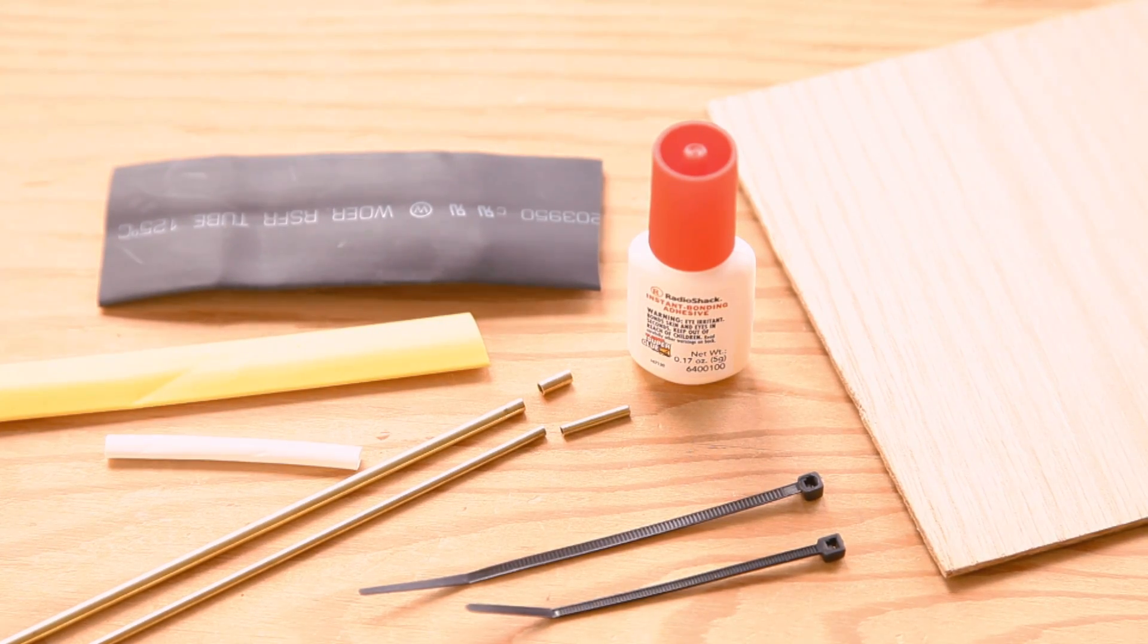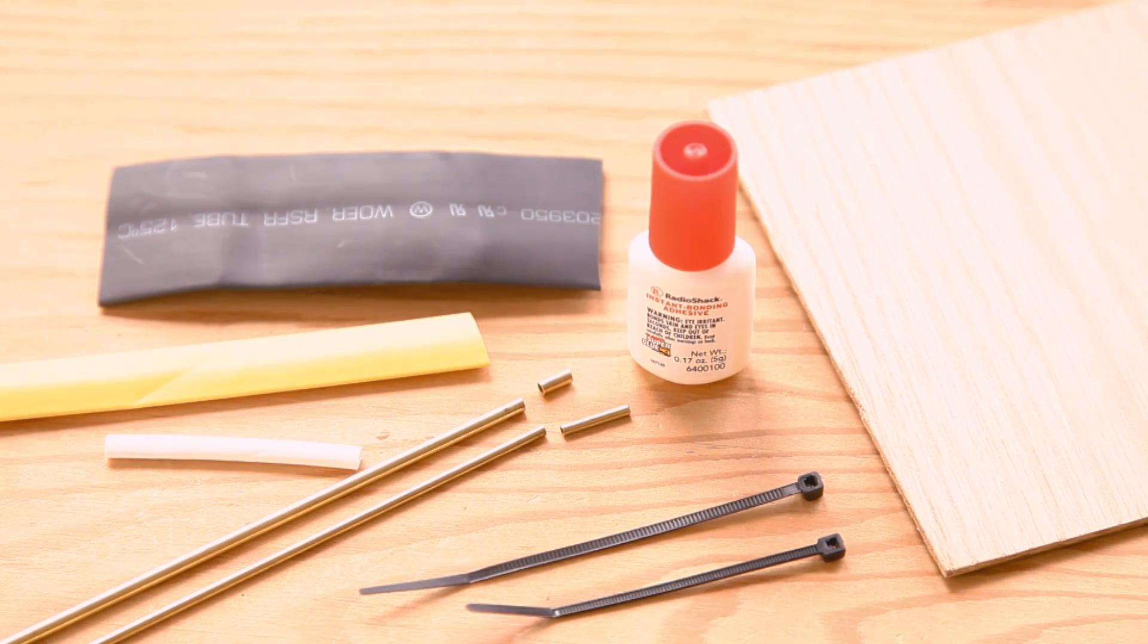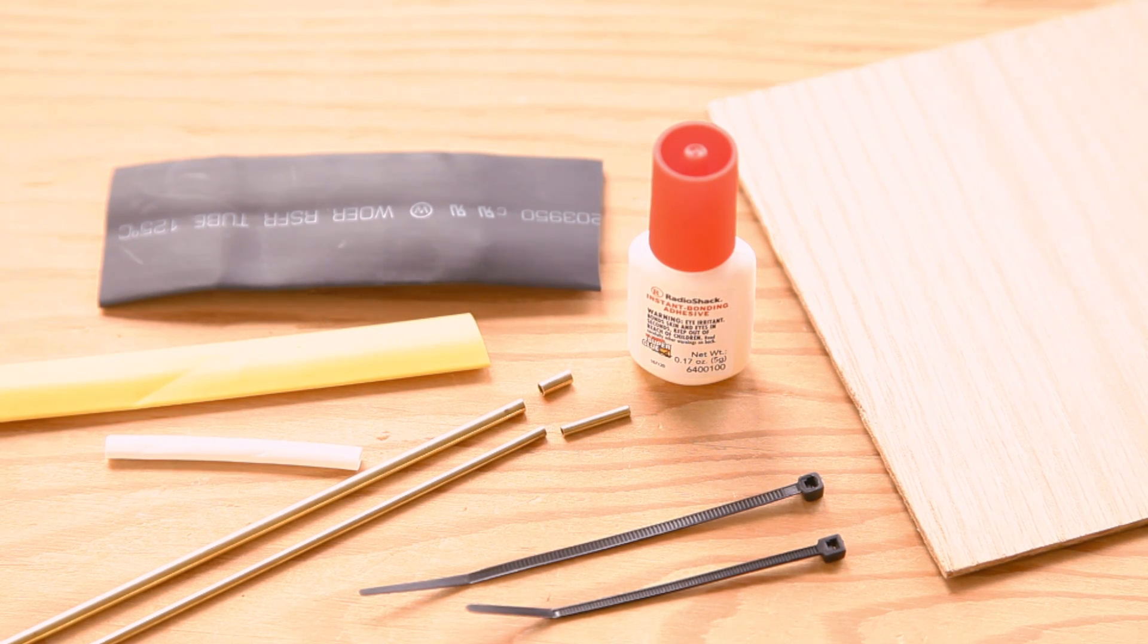You'll also need these parts: heat shrink tubing, glue, eighth inch brass telescoping metal tubes, zip tie, one-eighth inch birch plywood or other material to cut body parts out of.